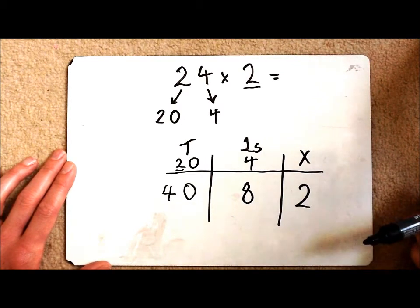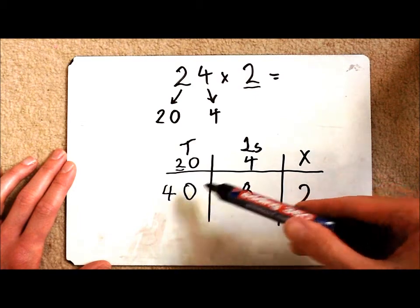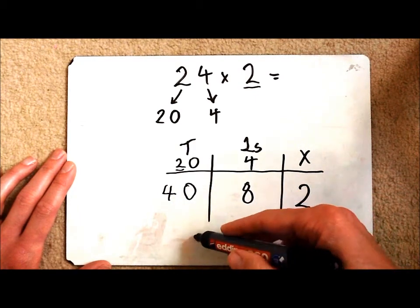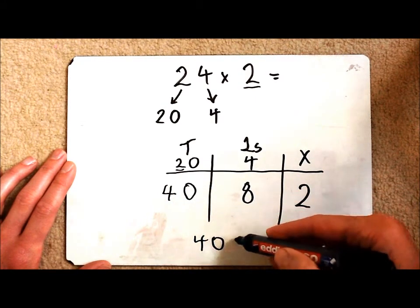But where's my answer? Well, I've got to take each of my numbers here and I've got to add them together. So I've got 40 plus 8.